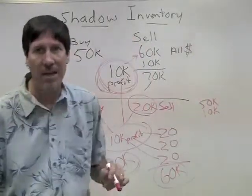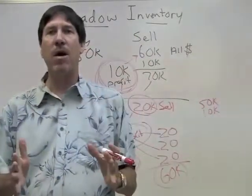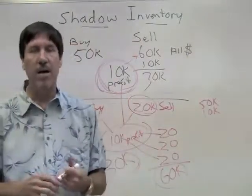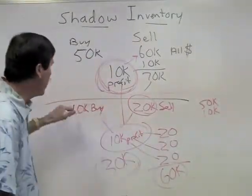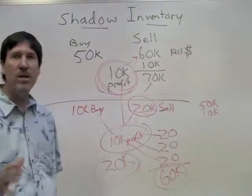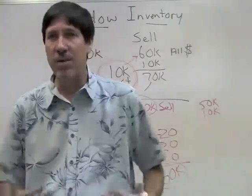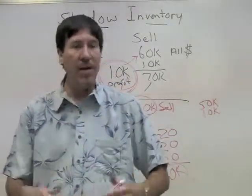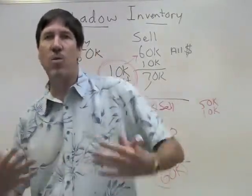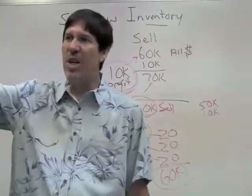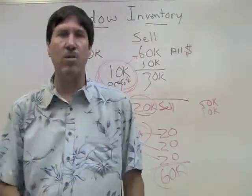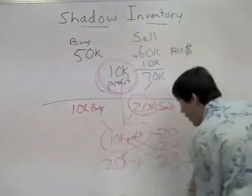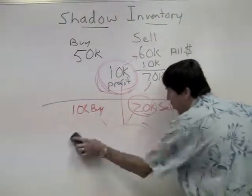If you know anything about the stock market, the first thing they tell you is to diversify. That's why you see a lot of our houses on our website at investorsrehab.com at $15,000, $20,000, $25,000 — because we're negotiating deep, deep discounts on these houses. Let me give you an example of a deal we have closing next week.